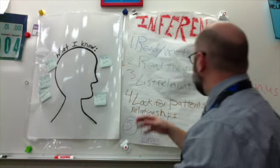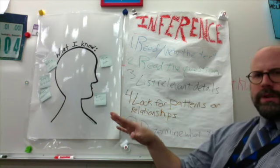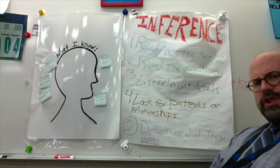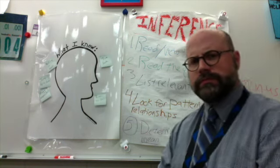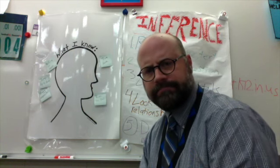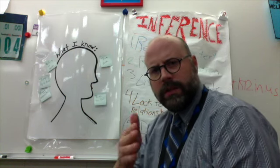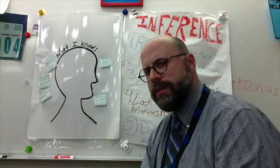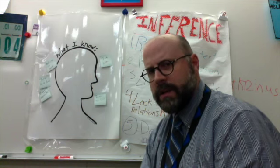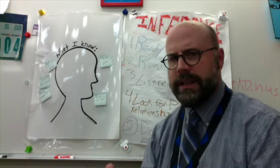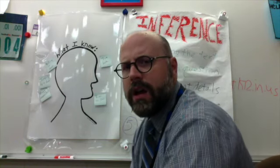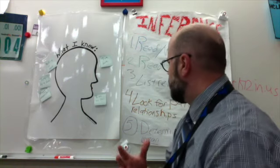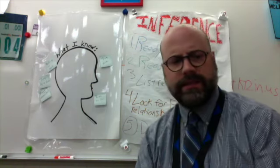Now that we've listed the relevant details, we need to look at number four: look for patterns or relationships. What does that mean? A pattern is something that's repeated. A relationship is how things are related. So, how are these things related, or what is a pattern I notice amongst these things that helps me figure out the answer to my question of what season is this?